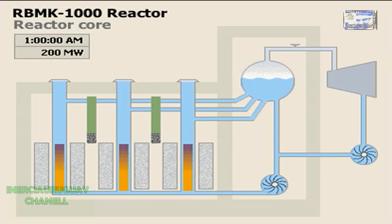At the same time, the instability of the reactor forced the operators to take manual control of the cooling system and to shut down a number of automatic warning systems in order to continue the test. The operators did not know that steam was starting to form in the lower part of the core, making the reactor even harder to control.